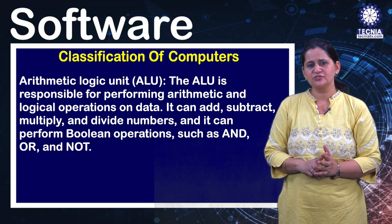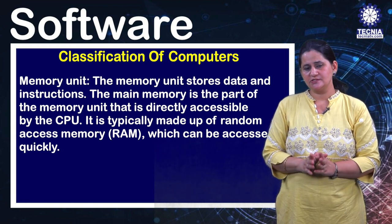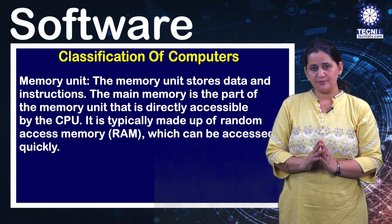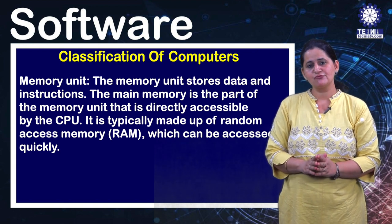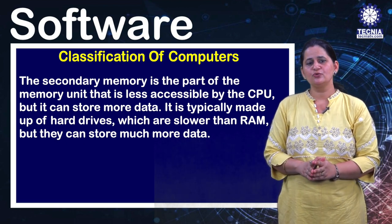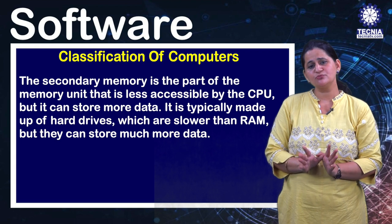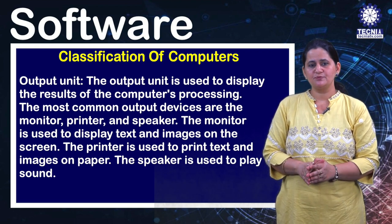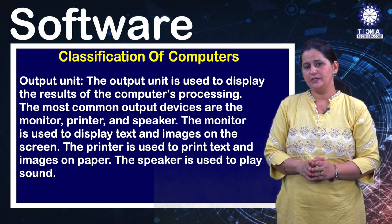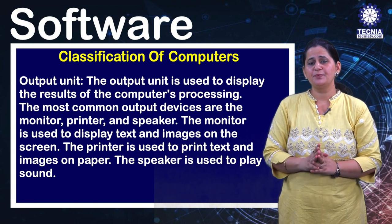The memory unit stores data and instructions. The main memory is directly accessible by the CPU and is typically made of RAM, which can be accessed quickly. The secondary memory is less accessible but can store more data; it is typically a hard drive, which is slower than RAM but can store much more data. The output unit displays the results of the computer's processing. Common output devices include the monitor for displaying text and images, the printer for printing on paper, and the speaker for playing sound.